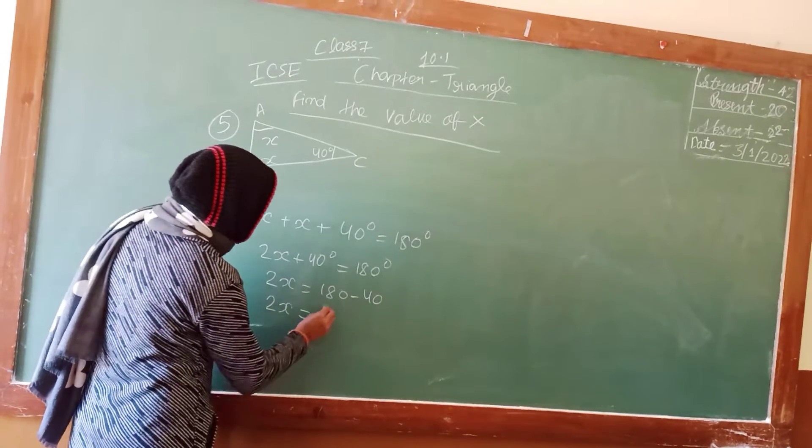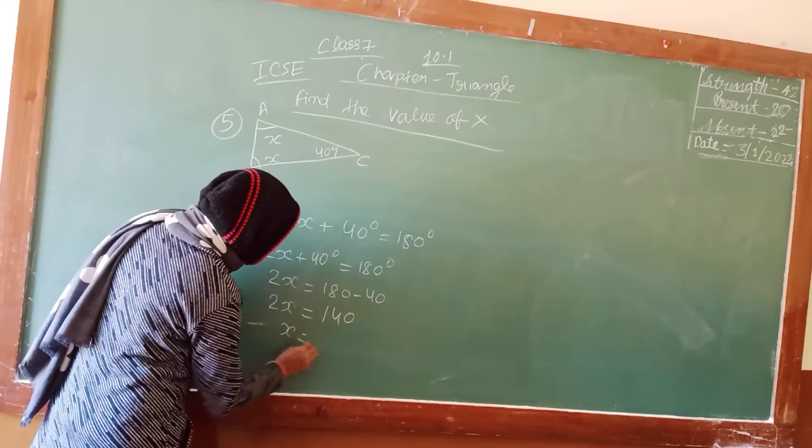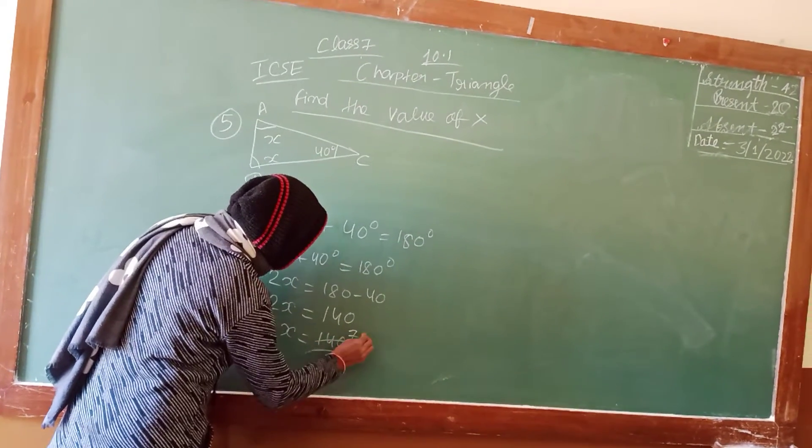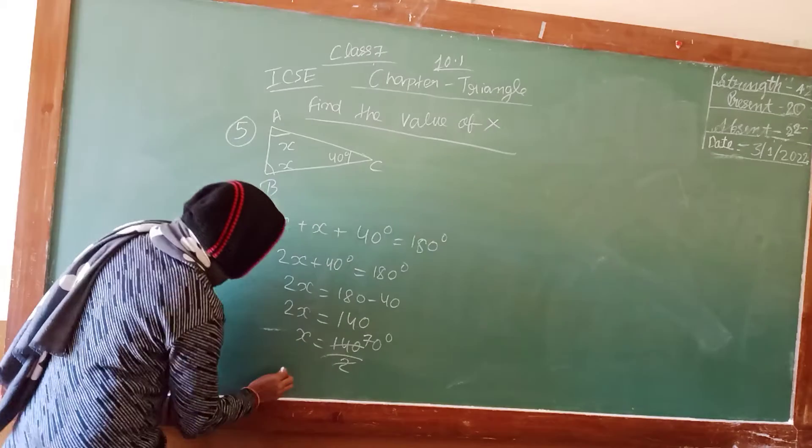And x equals to 140 divided by 2, that is 70 degrees. So here we got the answer that the value of x will be 70 degrees.